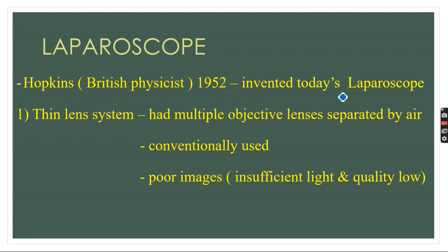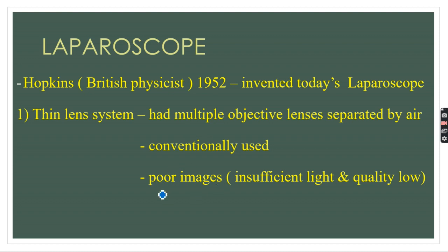There are two basic systems. Previously, the thin lens system was used. In this type of laparoscope, there were multiple objective lenses whose images were separated by an air column — this was the conventional system. However, it produced poor images due to insufficient light transmission, resulting in very low-quality images through the thin lens system laparoscope.